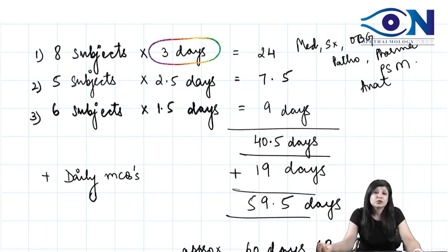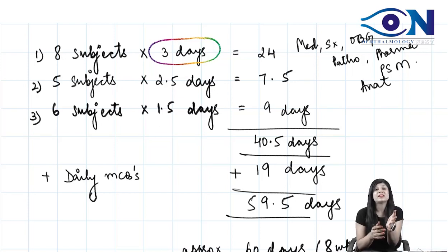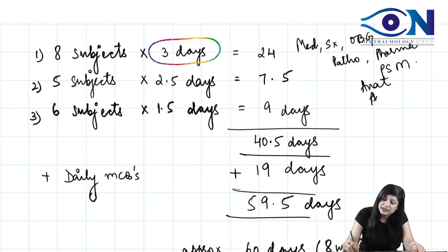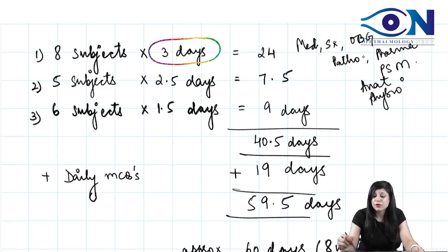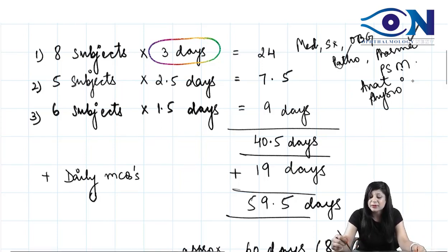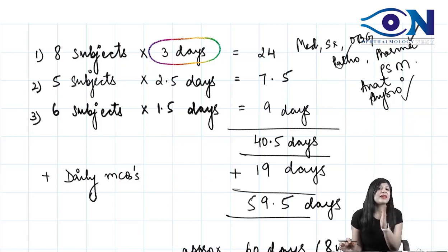You can include Anatomy, Physiology, and Biochemistry as well, giving you a total of eight large subjects. Give three days each to these large subjects. Even if you miss something in Medicine, when you study Pathology, Pharmacology, and Physiology alongside it, you have covered about 70 to 80 percent of Medicine, which forms the basics.